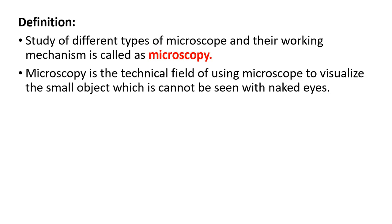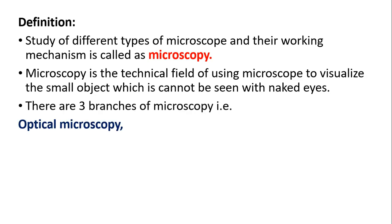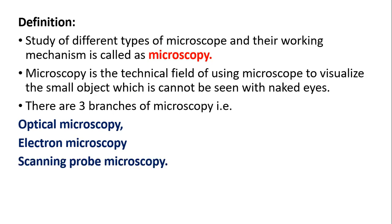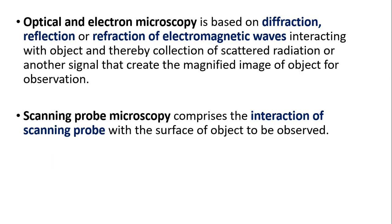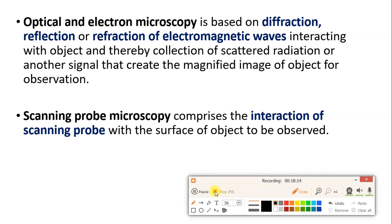A simple microscope consists of only one bi-convex lens, while a compound microscope requires a combination of two or more lenses and is more developed than the simple microscope. Microscopy is a technical field in which we study microscopes to visualize small objects that cannot be seen with the naked eye. There are three branches of microscopy: optical microscopy, electron microscopy, and scanning probe microscopy. Optical and electron microscopy are based on diffraction, reflection, and refraction of electromagnetic waves interacting with the object to produce a magnified image. Scanning probe microscopy involves the interaction of a scanning probe with the surface of the object to be observed. This concludes the introduction to techniques in cell biology.